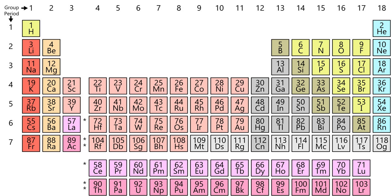The atomic number is the absolute definition of an element and gives a factual basis for the ordering of the periodic table. The periodic table is used to predict the properties of new synthetic elements before they are produced and studied. In 1871, Mendeleev published his periodic table in a new form, with groups of similar elements arranged in columns rather than in rows, and those columns numbered I to VIII corresponding with the element's oxidation state. He also gave detailed predictions for the properties of elements he had noted were missing; these gaps were subsequently filled as chemists discovered additional naturally occurring elements.